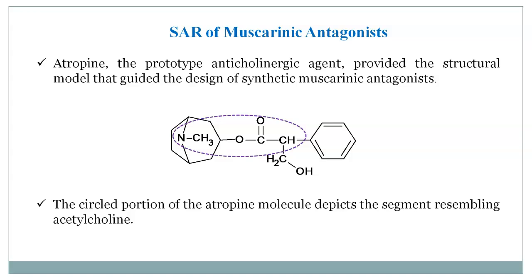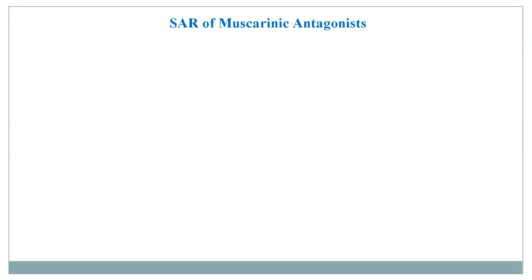One differentiating point between atropine and acetylcholine is the size of the acyl portion of the molecule, and this size is a major factor in blocking action. Many substituted acetic acid esters of amino alcohols were prepared and evaluated for biological activity. We are now considering a general structure for the SAR discussion.